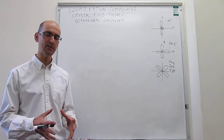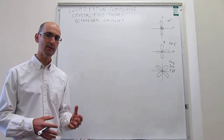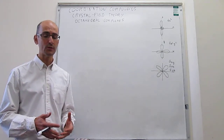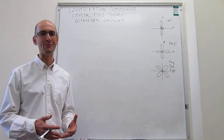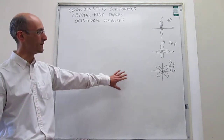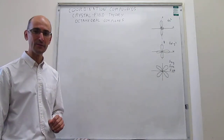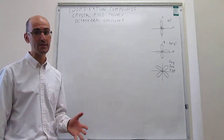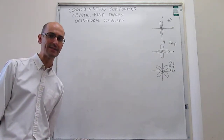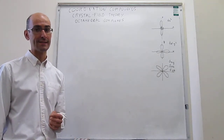Generally, when we think about transition metal chemistry, the d orbitals of the transition metal are involved. So it's instructive to remember what the shapes of those d orbitals are. There are five d orbitals, and they are degenerate — in principle, they have exactly the same energy, but their shapes and alignment are slightly different.